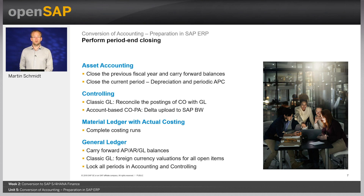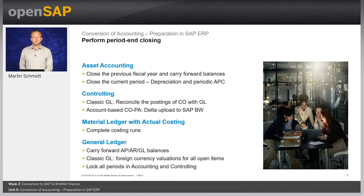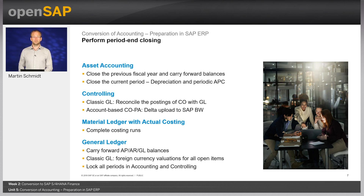In general ledger, if you have been using the valuation for balance sheet preparation function in classic general ledger to evaluate foreign currencies, you must set the valuation difference in open items to zero by resetting valuations for all periods in the current fiscal year using the foreign currency valuation program. Not doing so could result in incorrect values after migration. Finally, lock all periods in finance and controlling, document your financial data for later comparison, and run the simplification item check once more to confirm everything is green before starting Software Update Manager.